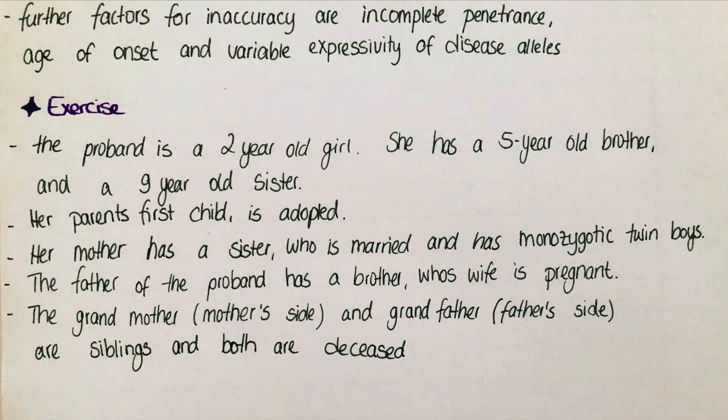The mother of the proband has a sister who is married and has monozygotic twin boys — you can check the symbol overview for how to indicate that. The father of the proband has a brother whose wife is pregnant. When someone is pregnant we indicate it by writing a P inside the shape, whether it's a circle or a rhombus — this varies internationally, but the P makes it clear.